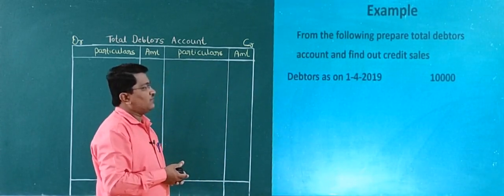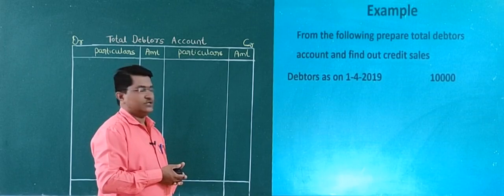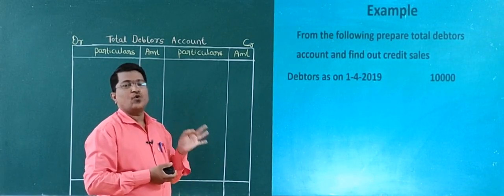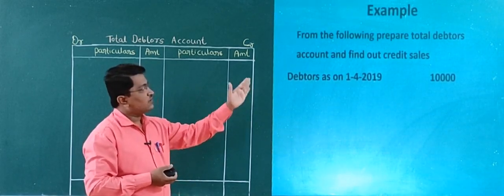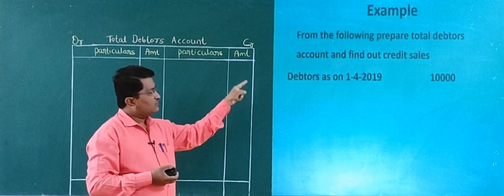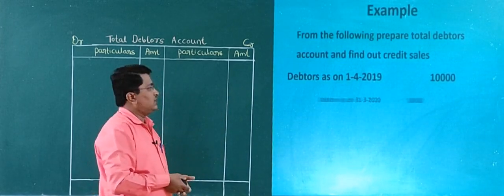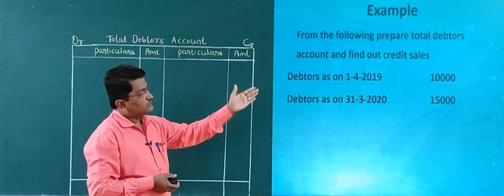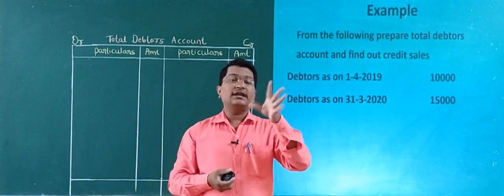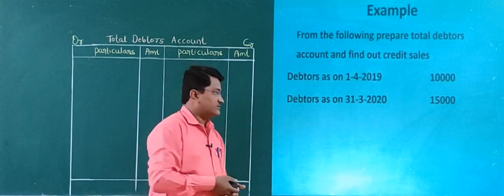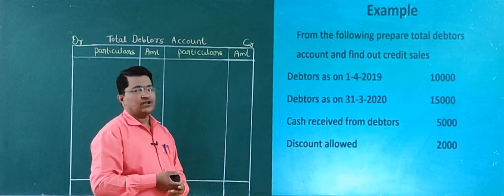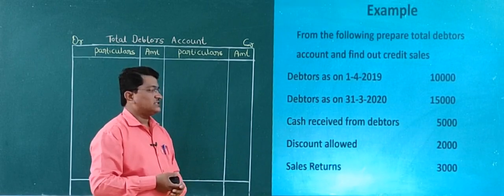Debtors as on 1st April 2019 — rupees 10,000. This is opening debtors since it is as on the beginning of the financial year. Debtors as on 31st March 2020 — rupees 15,000. This is closing debtors. Cash received from debtors is 5,000. Discount allowed is 2,000. And sales return is 3,000.